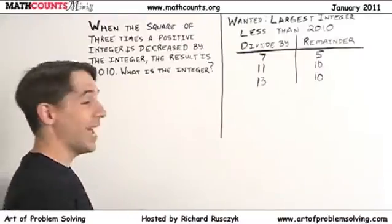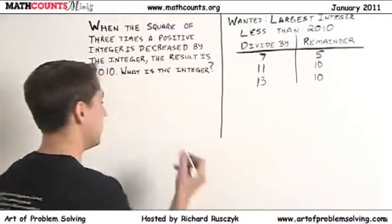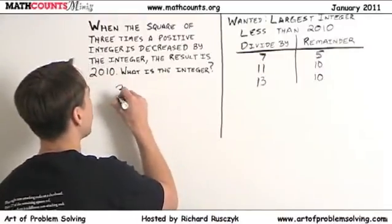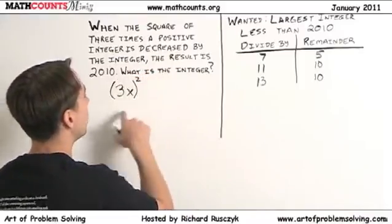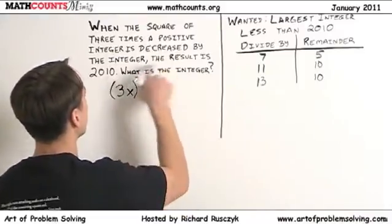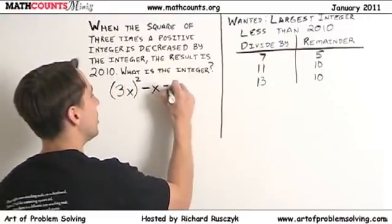So let's see, we'll call that positive integer x. So 3 times the positive integer, that is 3x. And then we take the square of that, we got 3x, that whole thing squared, we decrease by the integer, decrease by x, the result is 2010.